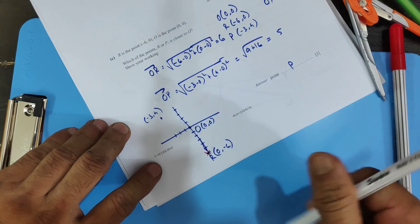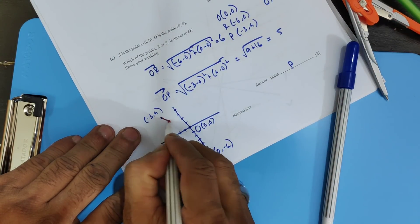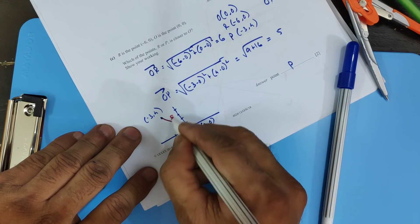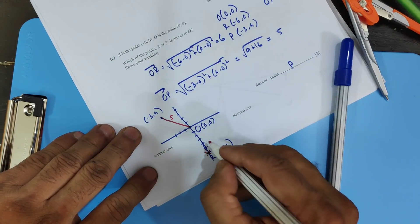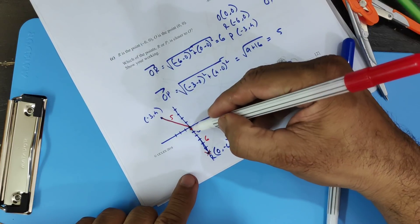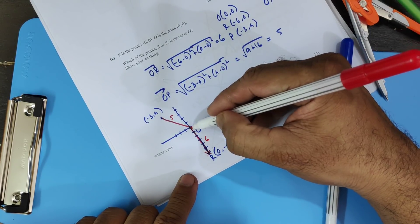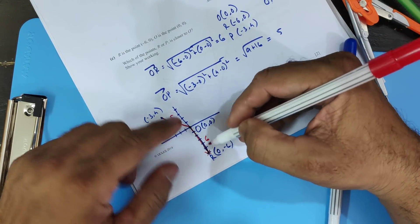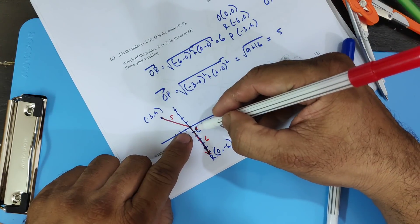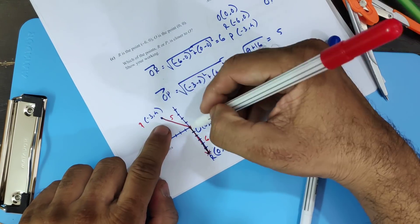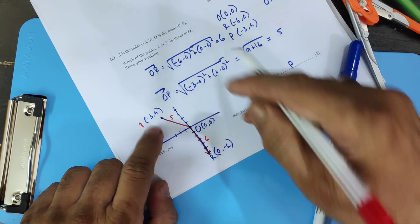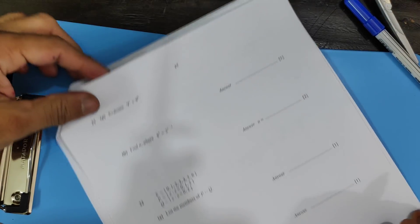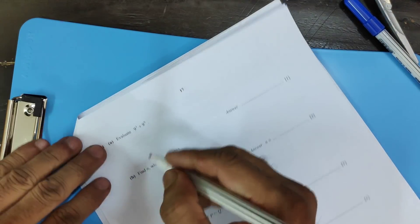When you join the points and find the distances, the magnitude from O to R is 6 and from O to P is 5. So you can see that R is 6 units from O and P is only 5 units from O, confirming P is closer to O.